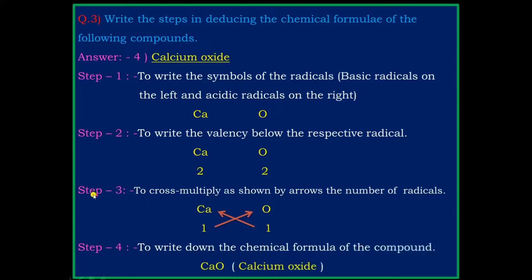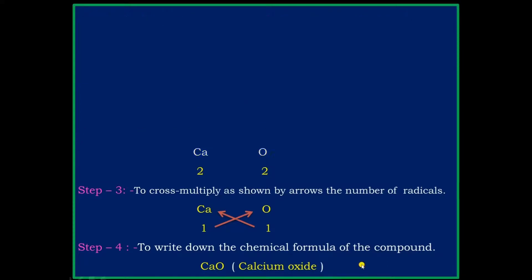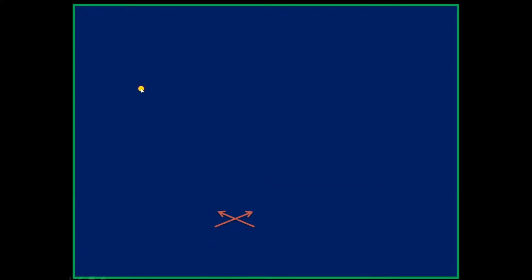Step 3: cross multiply as shown by the arrow — cross multiply 1 with oxygen and 1 with calcium. Step 4: write down the chemical formula of the compound. The chemical formula is CaO — calcium oxide.